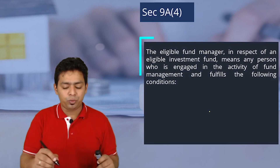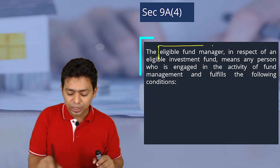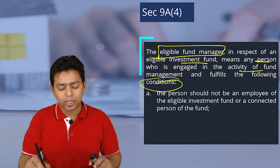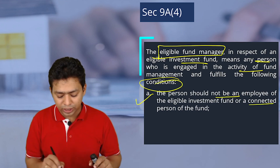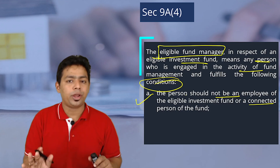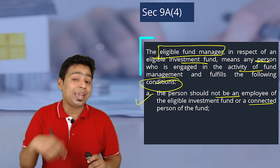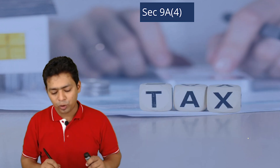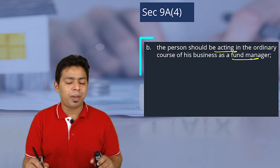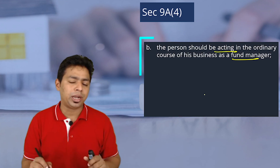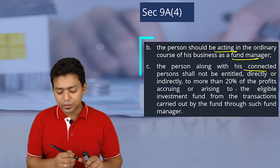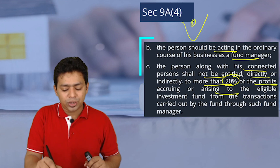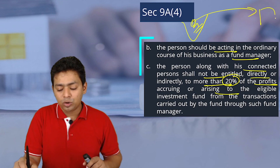Any remuneration paid by the fund to the eligible fund manager for fund management activity should not be less than the amount calculated in the prescribed manner. Regarding conditions for the eligible fund manager: the person should not be an employee of the eligible investment fund or connected person of the fund — they should earn commission, not salary. The person should be registered as a fund manager or investment advisor in accordance with SEBI regulations, should be acting in the ordinary course of business as a fund manager, and along with connected persons shall not be entitled to more than 20% of the profit accruing to the eligible investment fund.